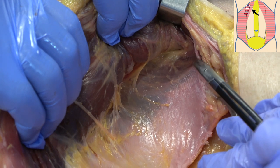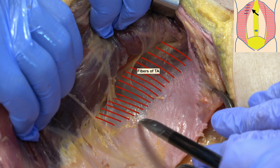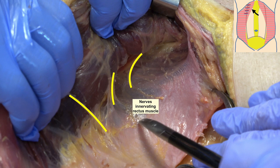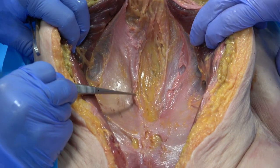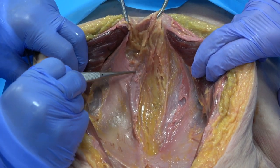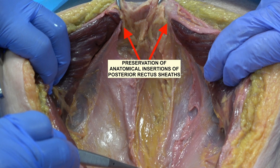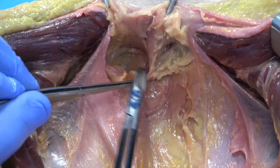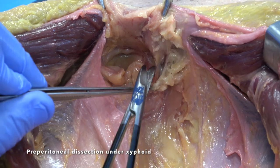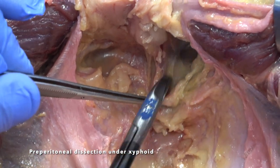We can here discern the myofascial limit of the transversus abdominis muscle. Here we show how we follow the medial incision and stop in the cranial part on both sides. This way the fatty triangle is very wide, and we then start the periperitoneal dissection below the xiphoid and laterally to the preserved posterior rectus sheath, so we can access the plane described by Nowitzki before starting the posterior component separation.